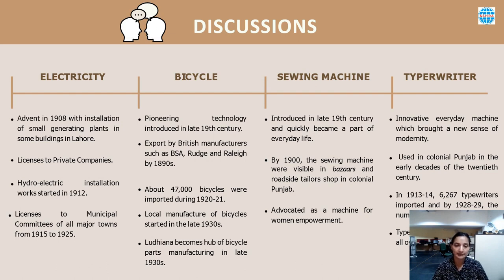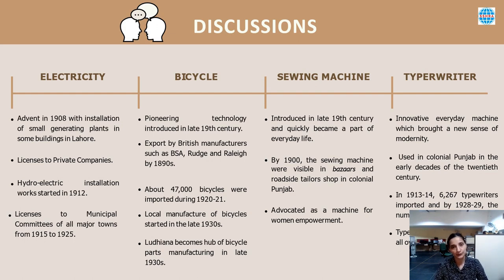The typewriter was an important innovative technology developed in the second half of the 19th century that served on a global scale to articulate a new sense of modernity. These were used in colonial Punjab by the early decades of the 20th century. In 1913–14, 6,267 typewriters were imported, and by 1928–29, the number increased to 21,487. The most famous typewriter brand was the American brand Remington, which was marketed by outlets located at Lahore, Amritsar, Rawalpindi, Multan, Jhelum, Shimla and Ambala in colonial Punjab.